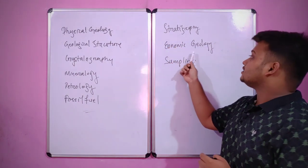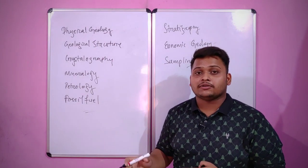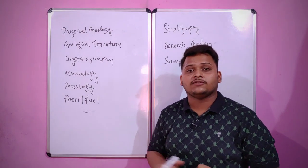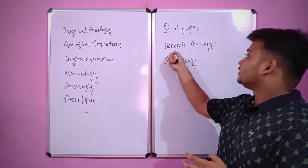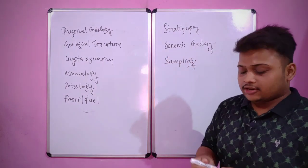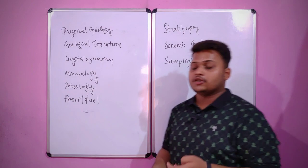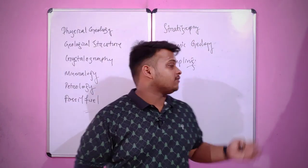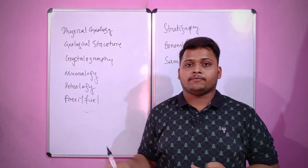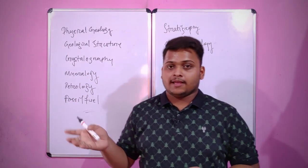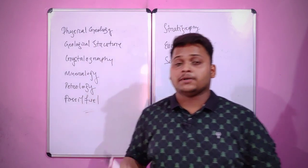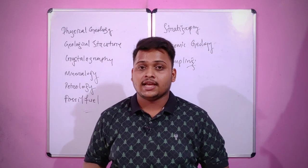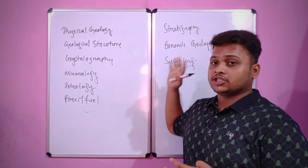Economic geology provides information about any matter found by a geologist and its economic value — how it is valuable for human beings. Then it comes to the process of sampling. A geologist, under research and examination, takes some process of sampling. He checks that matter — what type of matter it is, whether it has a glittering property, whether it may be a combustible matter, or a source of energy. All of these things are covered by geology.